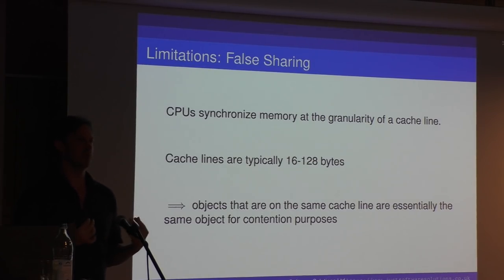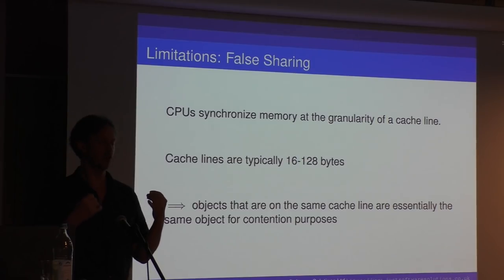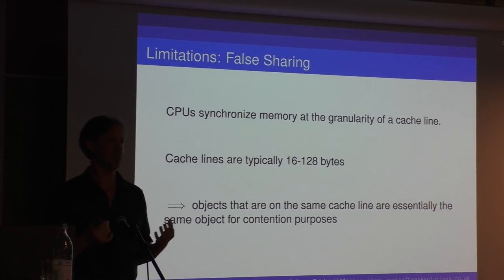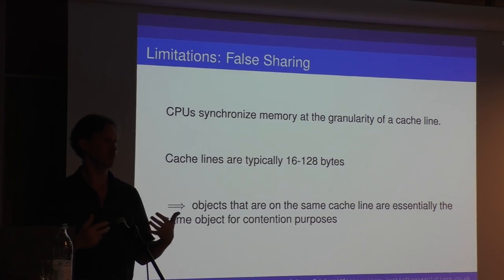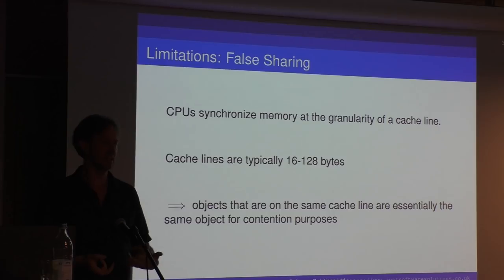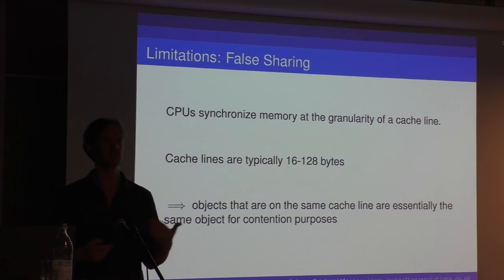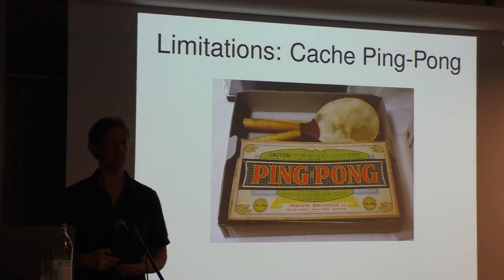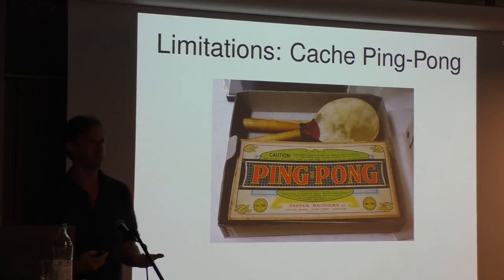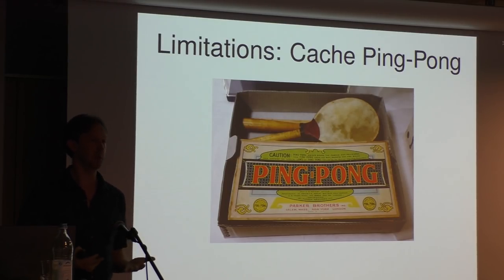From the perspective of scalability and contention, these multiple objects might as well be a single object. This idea is called false sharing — they are sharing the cache line even though they are not really the same object. So that is something to be aware of.